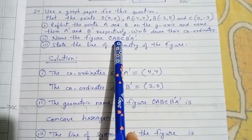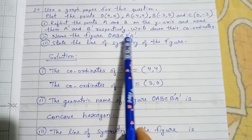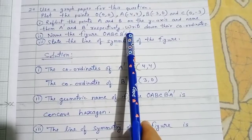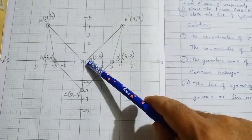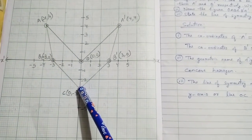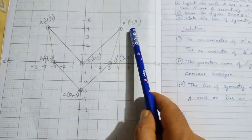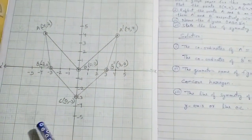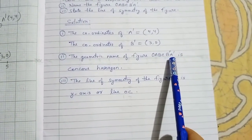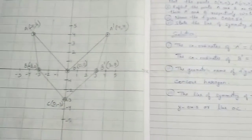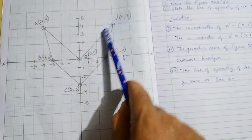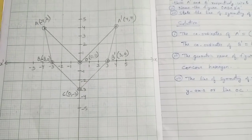Question 2: Name the figure O-A-B-C-B'-A'. Join the points in order: O to A, A to B, B to C, C to B dash, B dash to A dash, and A dash back to O. The figure formed has six sides — first, second, third, fourth, fifth, sixth — and it looks concave, so the geometric name is concave hexagon.